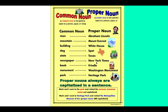The general name is 'man'; the proper noun — the specific name — is Abraham Lincoln, so the A and L are capitalized. The common noun 'mountain' becomes the proper noun Mount Everest. 'Building' becomes White House. 'Dog' becomes Spot. 'State' becomes Texas. 'Newspaper' becomes New York Times or the Waco Tribune Herald — notice the N, Y, and T are capitalized. 'Book' becomes Frindle. 'Monument' becomes Washington Monument. 'Park' becomes Heritage Park — the H and P are capitalized.